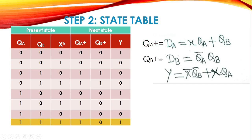Step two is the state table. The present state is QA and QB, the input is X, the next state is QA+ and QB+, and the output is Y. Since for D flip-flops the next state equals the D input, QA+ = DA = X·QA + QB, QB+ = DB = Q̄A·QB, and Y = X̄·Q̄B + X·QA.